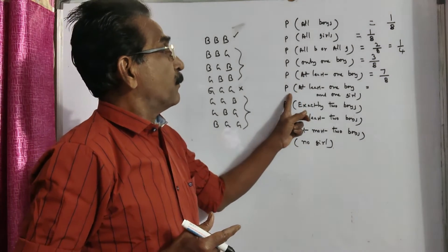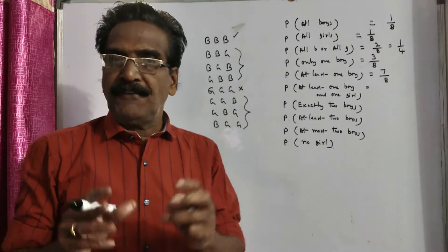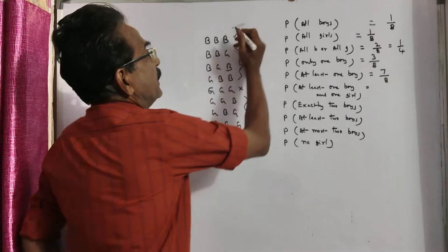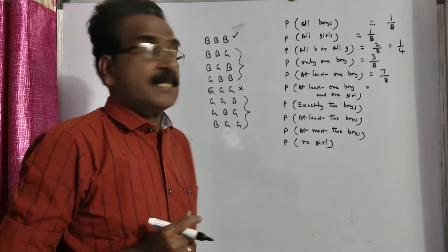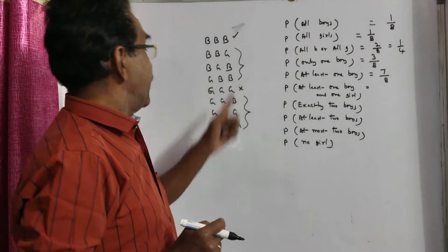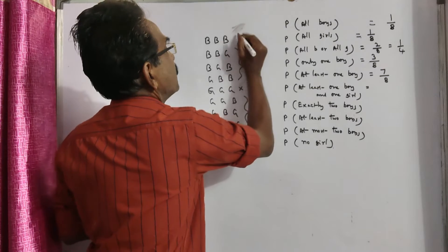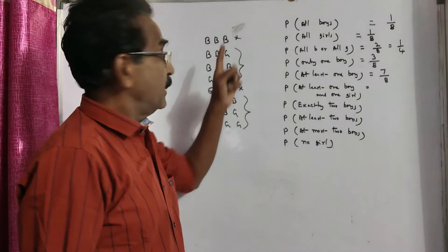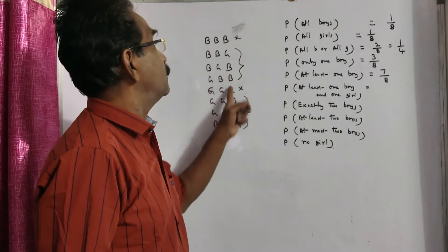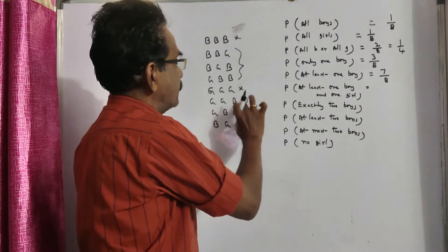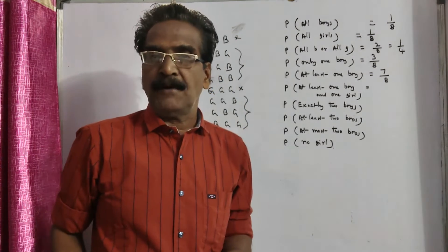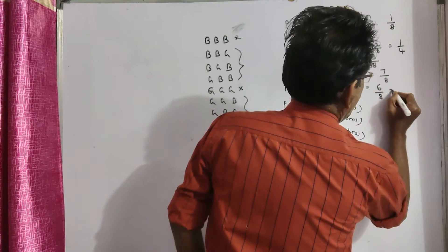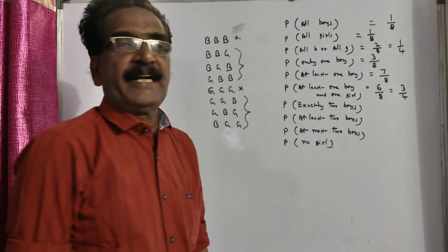Next, probability of at least one boy and one girl. The family should have at least one boy and one girl. The all-boys outcome has no girl, and the all-girls outcome has no boy — we don't want these two outcomes. In the remaining six outcomes (3 plus 3), we have at least one boy and one girl. So favorable outcomes six, total number of outcomes eight: six by eight equals three by four is the required probability.